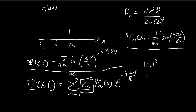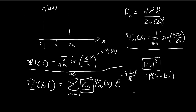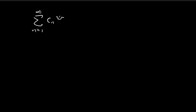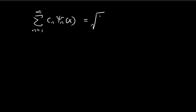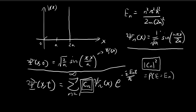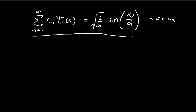Recall that |cₙ|² equals the probability that the energy is the nth energy level. We find cₙ from the initial wave function: at t=0, all the exponential terms equal 1, so we have the sum of cₙψₙ(x) equal to the initial wave function, which is √(2/a) sine(πx/a). Note this is only valid for x between 0 and a; everywhere else the initial wave function is equal to 0.